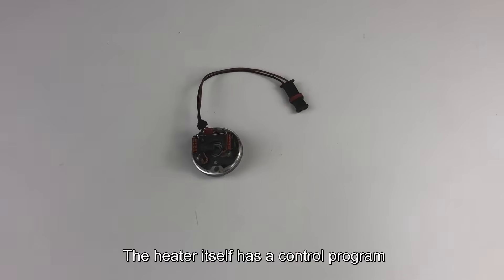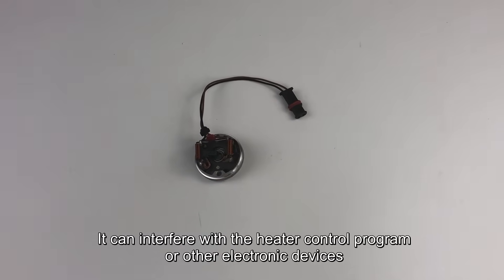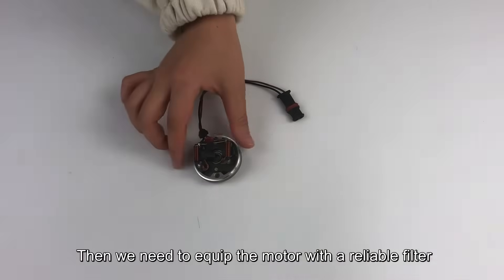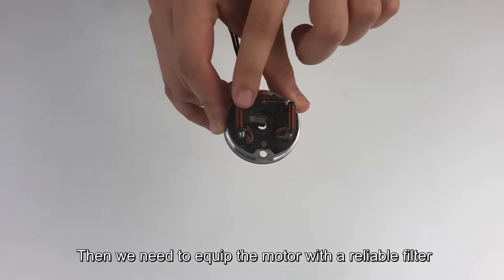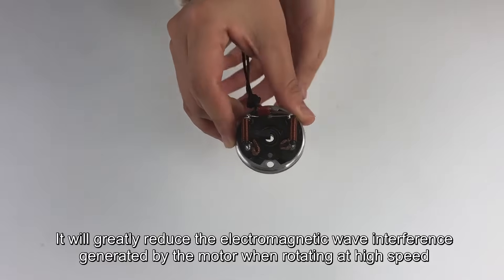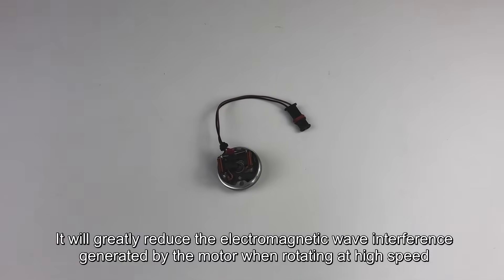The heater itself has a control program and the motor will generate electromagnetic waves during working. It can interfere with the heater control program or other electronic devices. Then we need to equip the motor with a reliable filter. It will greatly reduce the electromagnetic wave interference generated by the motor when rotating at high speed.